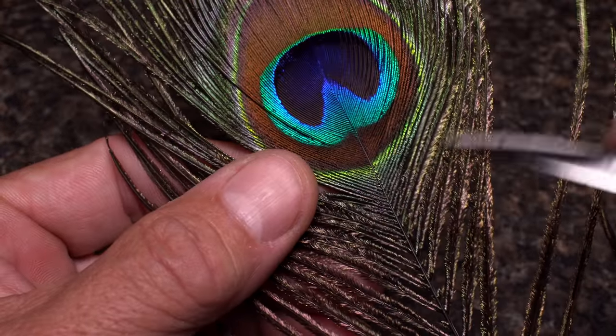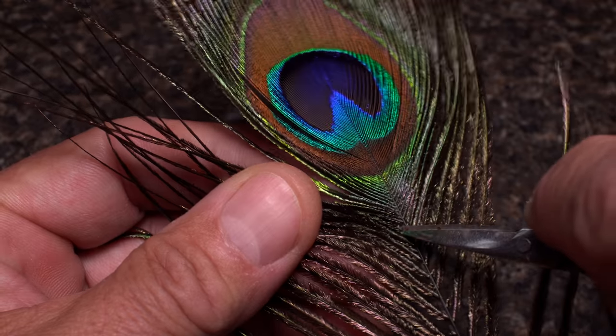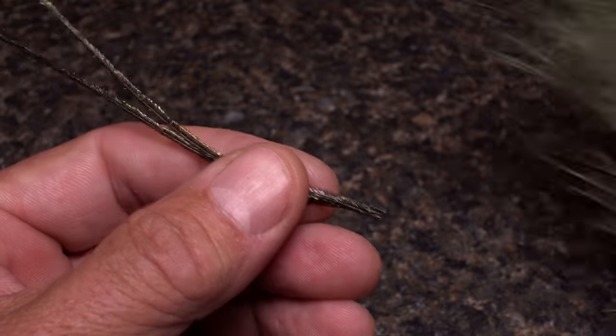Stripped peacock quills also produce incredible fly bodies. I like the ones immediately below the eye portion of the feather.